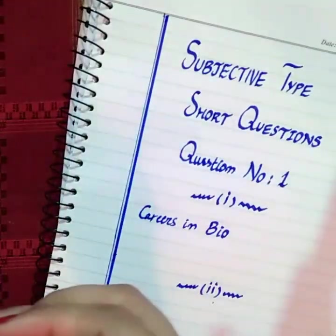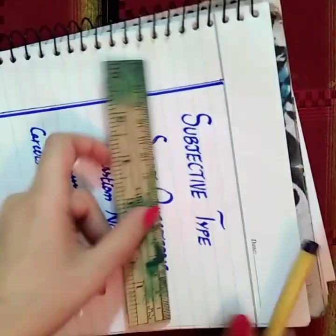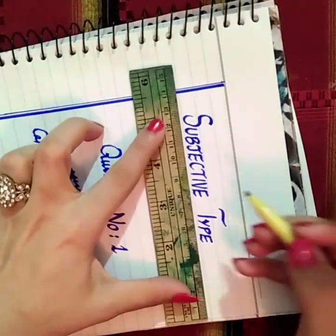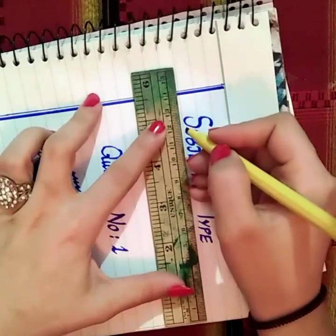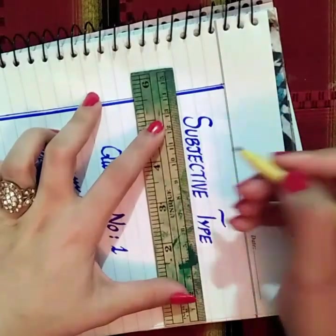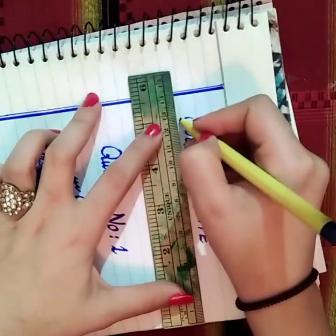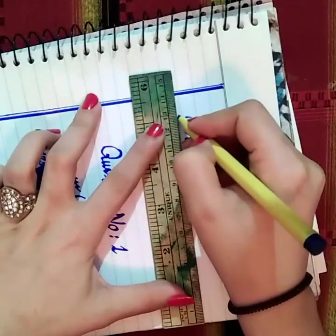Now you should underline your headings. You can use another marker — black or blue. Here I am using blue.